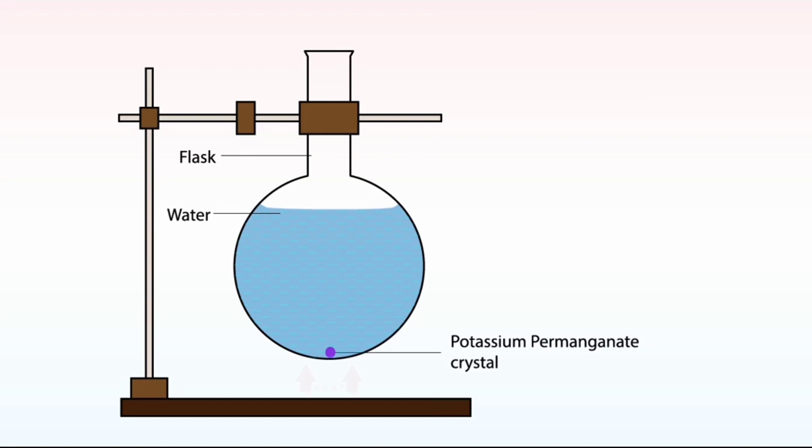When the flask is gently warmed at the center of the base, a purple streak will rise gently from the slowly dissolving crystal. This indicates that warm water at the center of the flask is rising.